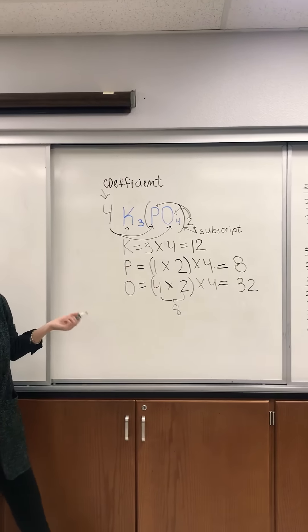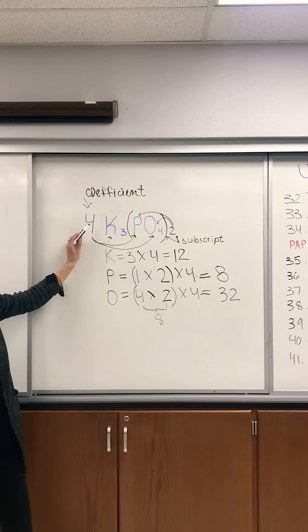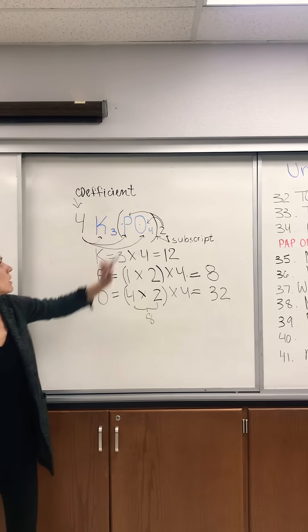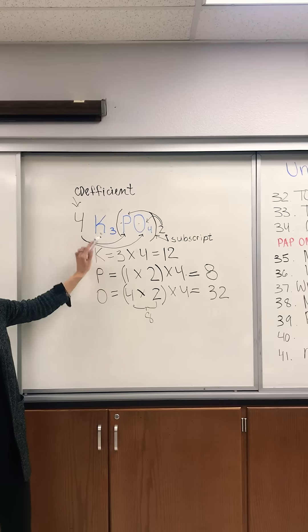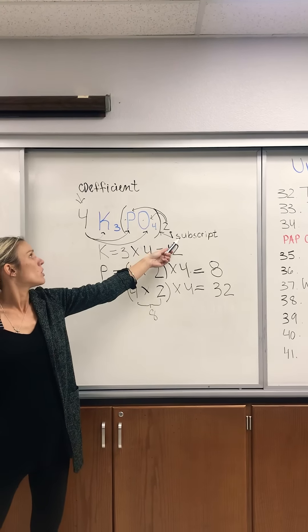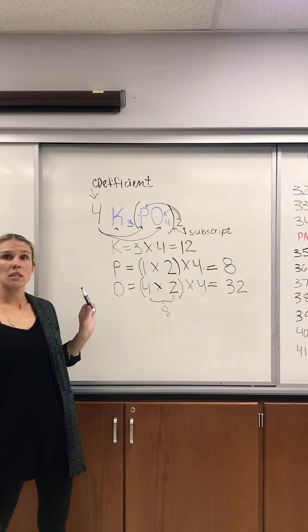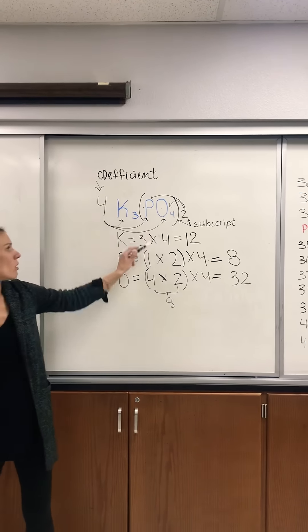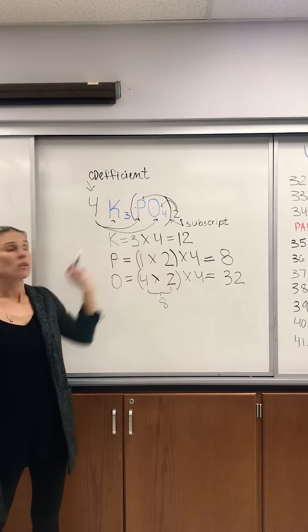That's how you count atoms. Remember that the coefficient distributes to every single element. Subscripts belong to the element. If a subscript is outside the parentheses, distribute it to every single item inside the parentheses. And last hint: you always multiply and never add.